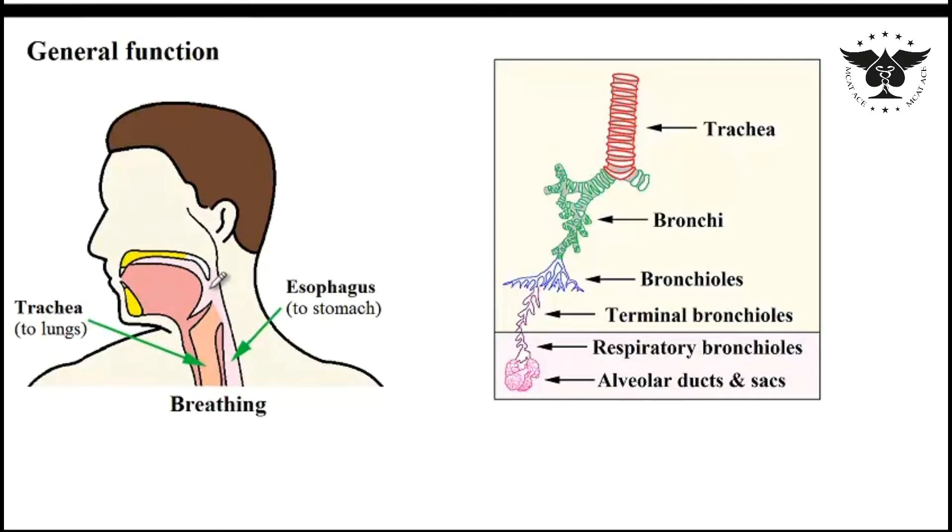So once again the pharynx which is located in this area is basically a tube-like structure that joins the nose and the mouth to the larynx, trachea, and esophagus. We've already discussed the function of the esophagus is to let food down into the digestive tract particularly the stomach.